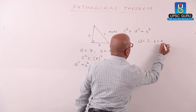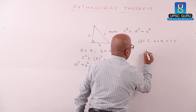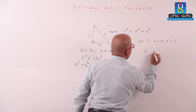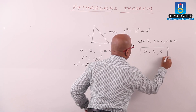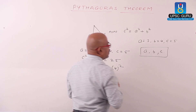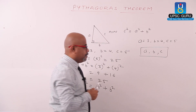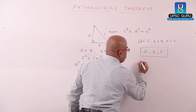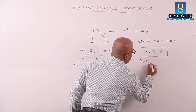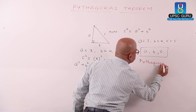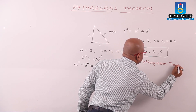All these values — a equals 3, b equals 4, and c equals 5 — this set of a, b, and c are called Pythagorean triplets.